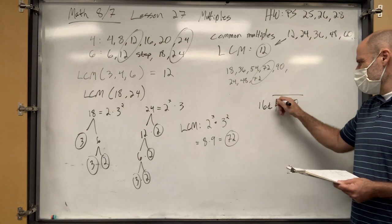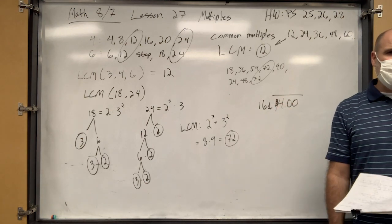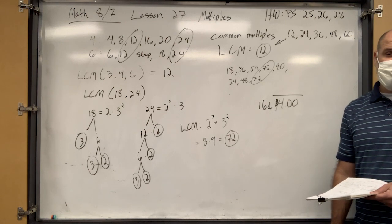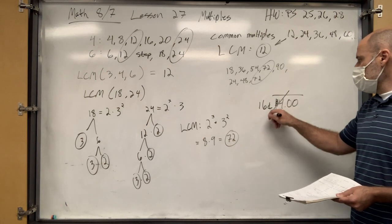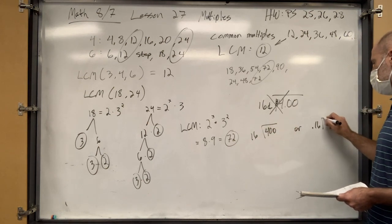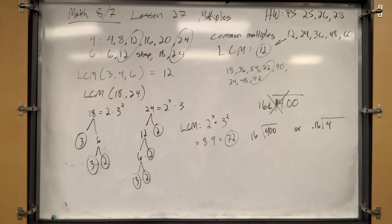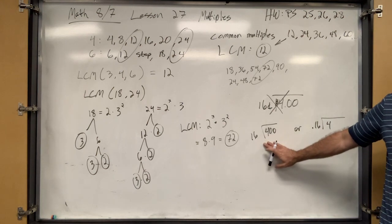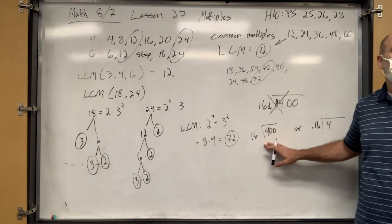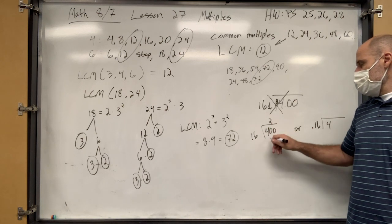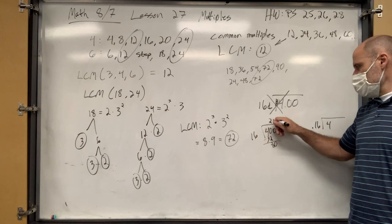What's easier — cents or dollars? I would say cents, because then you don't have to deal with decimals. So 400 cents divided by 16. Or you could keep it in dollars: 4 divided by 16. How many times does 16 go into 40 without going over? Two times with eight left over, and that goes in five times. Boom — 25 cents. So 0.25 dollars.